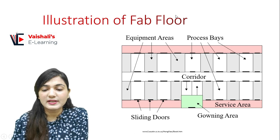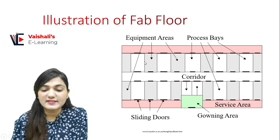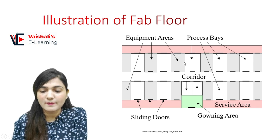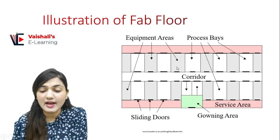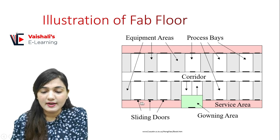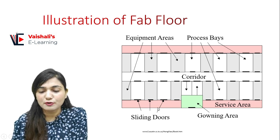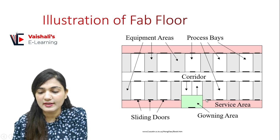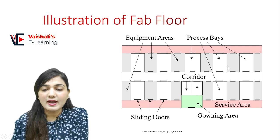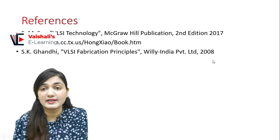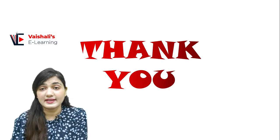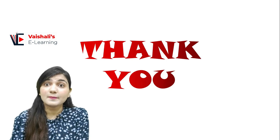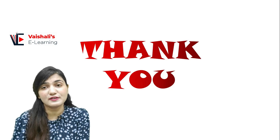This is the Fabrication Floor. The equipment areas are shown in grey color and the process bays in white. There is a corridor that allows movement from one process bay to another or from one equipment area to another. We enter through sliding doors from the gowning area. I hope you understand what a clean room is, why it is required, and its advantages. I hope you liked this session — please like, subscribe, share with friends, and give your feedback. Thank you so much.